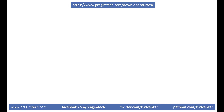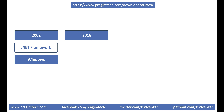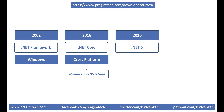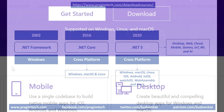Here is the summary. The first version of .NET Framework was released in 2002 and it supported only the Windows platform. In 2016, .NET Core was released and it's cross-platform. In 2020, .NET 5 was released and it supports even more platforms and application types than .NET Core.